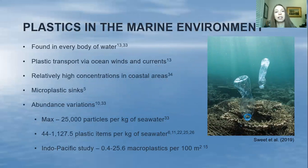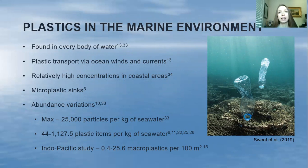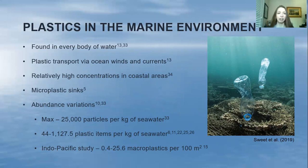Plastics are found in every body of water — every marine environment that has ever been tested for plastics, they found it. Plastic can transport to far regions like the deep sea and polar regions because it can move via ocean winds and currents. However, there are relatively high concentrations of plastics in coastal areas, since those tend to be densely populated. Coral reefs and other benthic ocean habitats, especially the deep sea, can be microplastic sinks where plastic accumulates and stays.